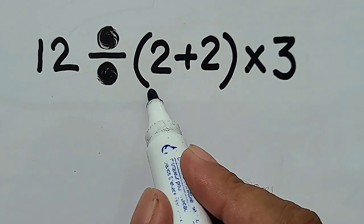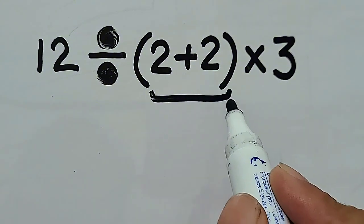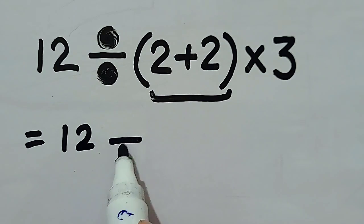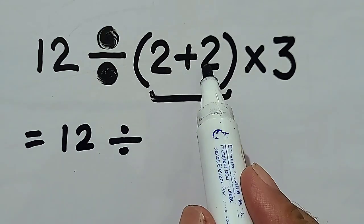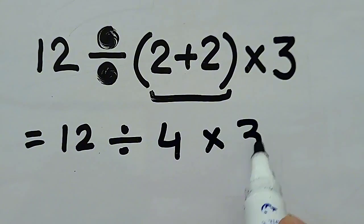First of all, PEMDAS says that we have to solve this parenthesis. So, 12 divided by 2 plus 2 is equal to 4 times 3.